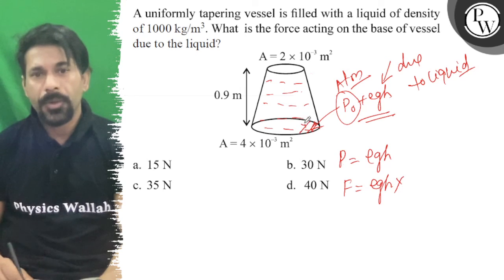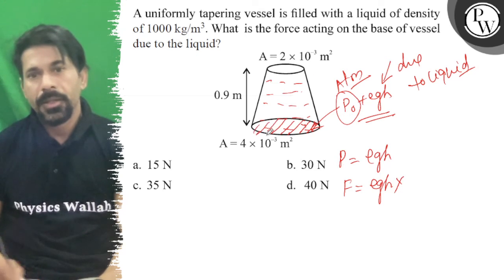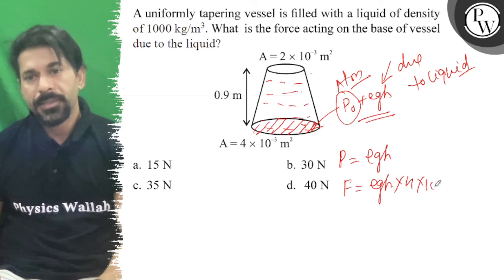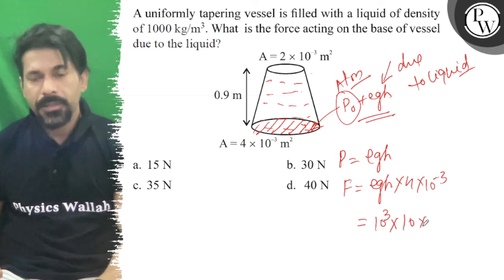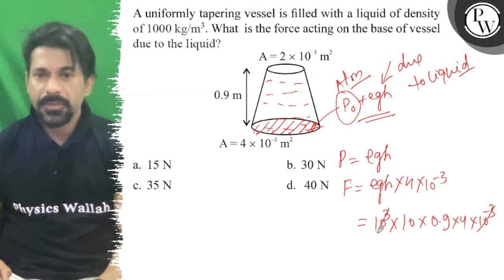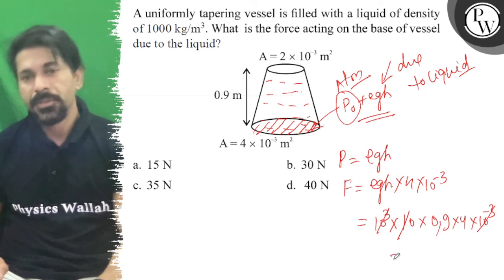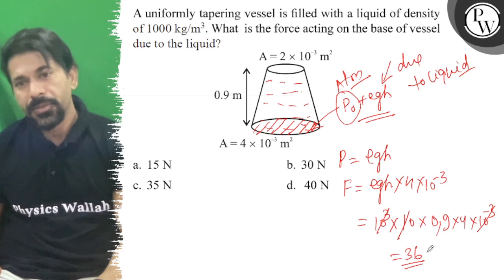So I will write it as 4 × 10⁻³. So that is equal to ρ times 10³, g is 10, h is 0.9 into 4 × 10⁻³. So this will cancel out this and this will cancel out this. So that is 36 newton.